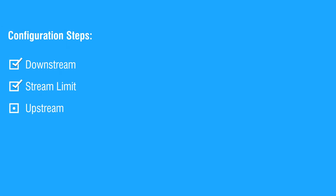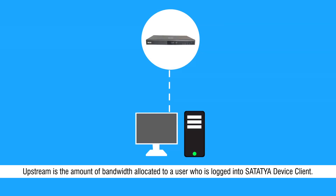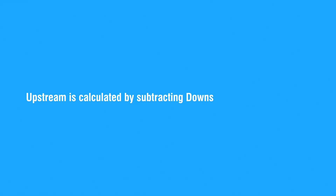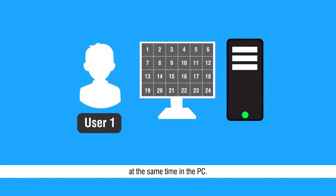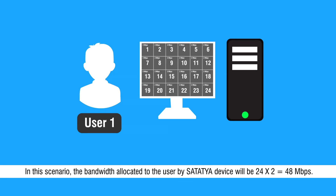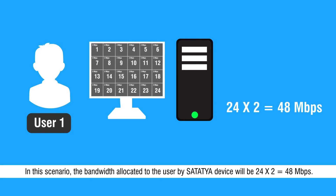Upstream is the amount of bandwidth allocated to a user who is logged in to the Satathya device client. Upstream is calculated by subtracting downstream from throughput. Consider a scenario in which user 1 is watching all 24 cameras connected with Satathya NVR-24P at the same time on a PC. Also assume the bitrate of each camera connected is 2 Mbps. In this scenario, the bandwidth allocated to the user by the Satathya device will be 24 × 2, that is 48 Mbps.